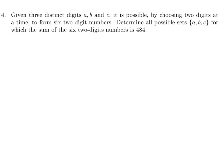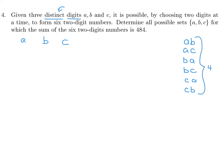Given 3 distinct digits A, B, and C, by choosing 2 digits at a time we can form 6 two-digit numbers: AB, AC, BA, BC, CA, and CB. Determine all sets {A, B, C} for which the sum of these 6 two-digit numbers is 434. A two-digit number like AB is actually 10A plus B — not A plus B. So adding all six numbers gives 10A + B + 10A + C + 10B + A + 10B + C + 10C + A + 10C + B equals 434.